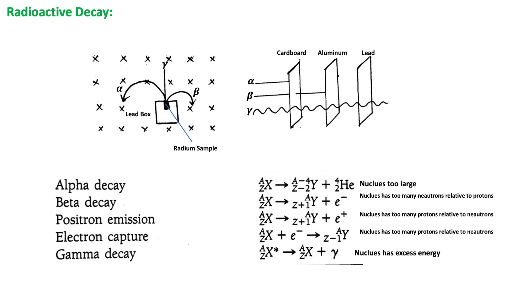Elements can change to other elements. For example, if a nucleus undergoes alpha or beta decay, its atomic number will change and the nucleus will become a different element.